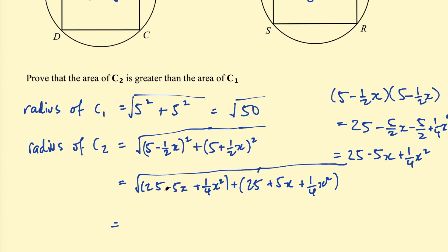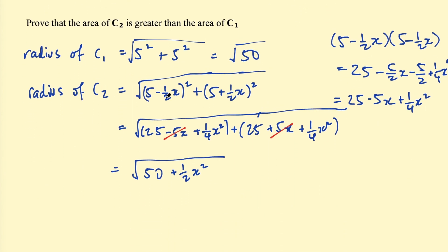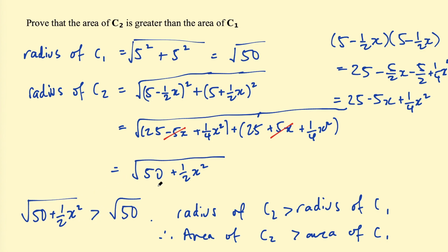The −5x cancels with the +5x, leaving √(50 + x²/2). This is enough to show that the radius of C2 is greater than the radius of C1: √(50 + x²/2) > √50, because x²/2 is a positive number being added. Since the radius of C2 is greater than the radius of C1, the area of C2 is greater than the area of C1.